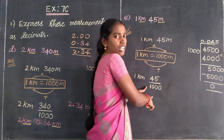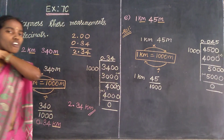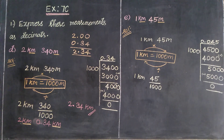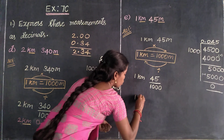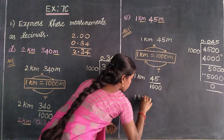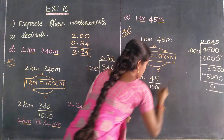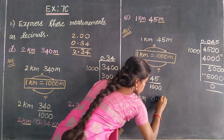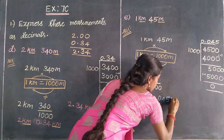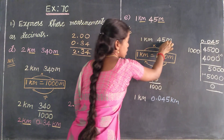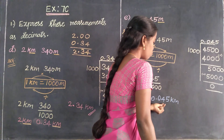So the answer is 0.045 kilometer. You change meters into kilometers: 45 divided by 1000 gives 0.045. So 1 kilometer has no changes, and 45 meters converted gives 0.045 kilometer.